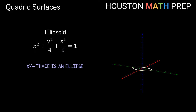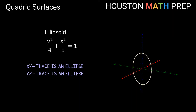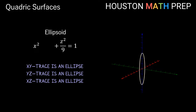Going back to the ellipsoid equation, the yz trace is found when x = 0. We again get an ellipse in the yz plane, this time going out two units in the y direction and three units in the z direction from the origin, based on our values for b and c. For the xz trace we set y = 0, leaving quadratic x and z terms only — again an ellipse, going out one unit in x and three in z based on a and c.